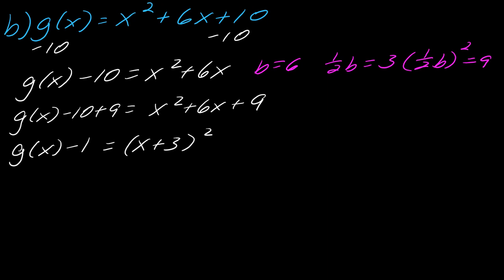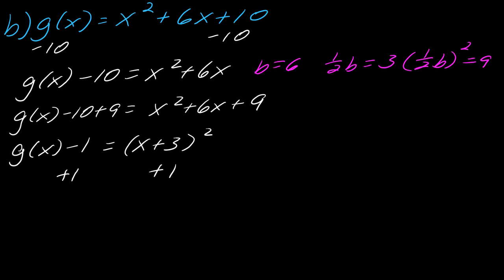To get this into that desired vertex form, I just have to add one to each side. And here's my final answer: g(x) equals x plus three squared plus one.